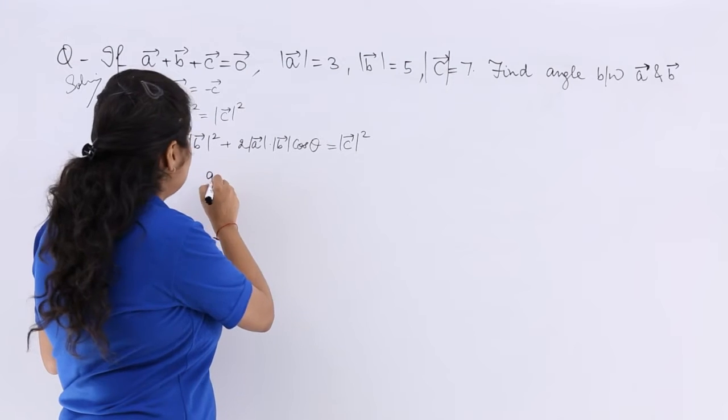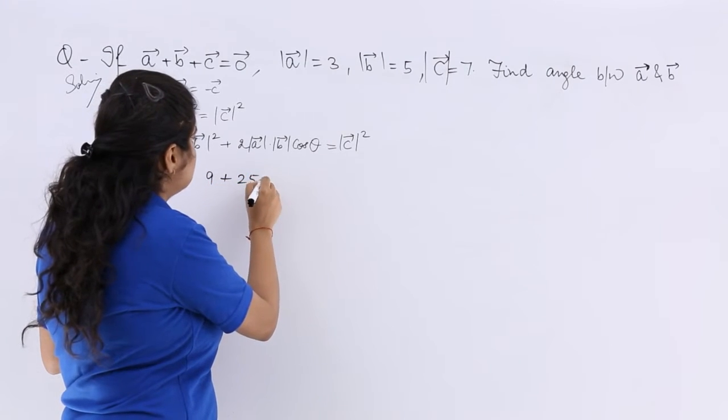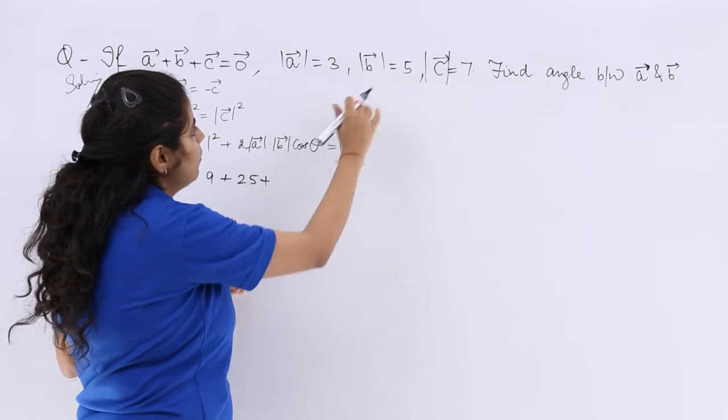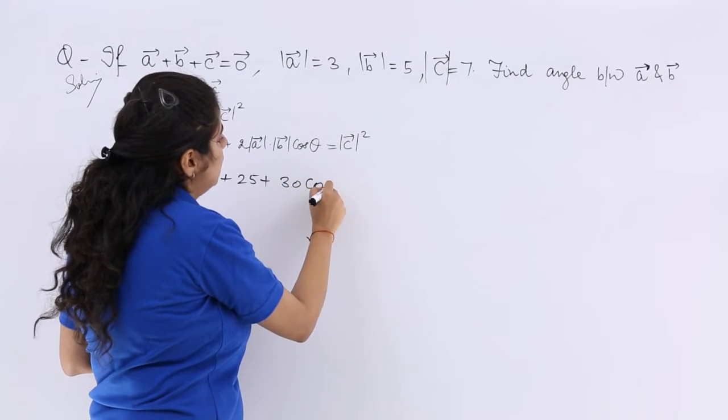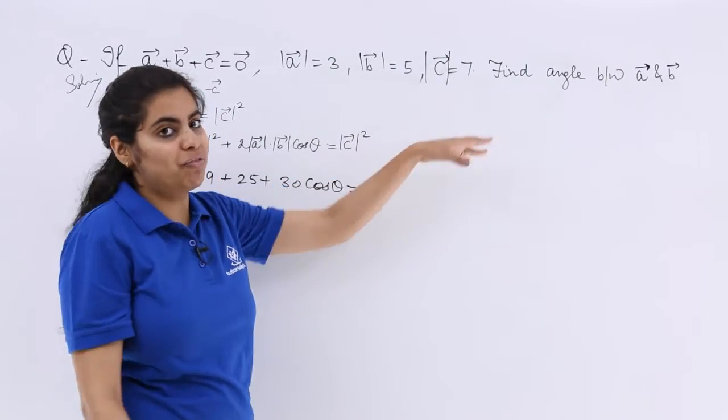Now what is A square? That is 9 plus B square is 25 plus 2AB is 2 into 3, 6 into 5 is 30 cos theta. Here it is 49.